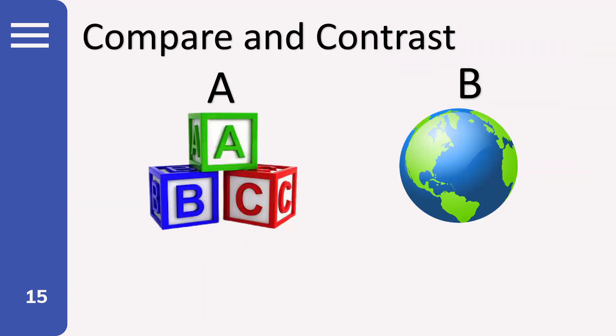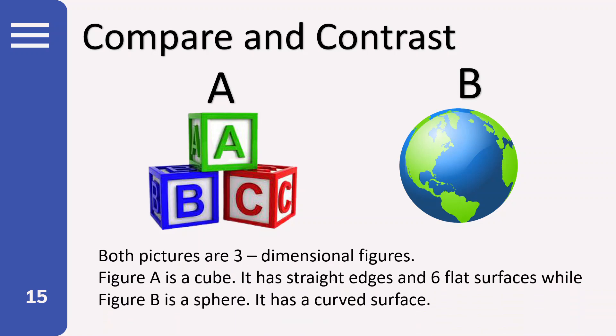Alright, okay. Now let's compare and contrast these figures, Figure A and Figure B. Now look, when we compare and contrast, we say first the similarities and then the differences. Alright, let's start. Both pictures are three-dimensional figures. Figure A is a cube. It has straight edges and six flat surfaces, while Figure B is a sphere. It has a curved surface.